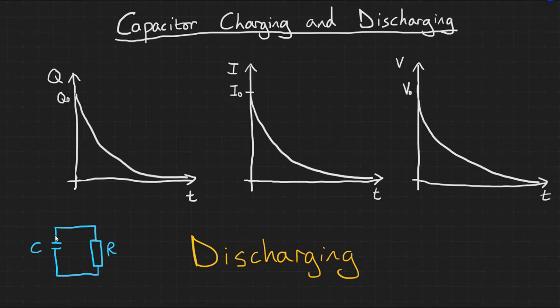Over time, the charge on the capacitors will decrease, reducing the potential difference and therefore the current. Eventually, the capacitor plates will lose their charge altogether and the current will stop flowing.